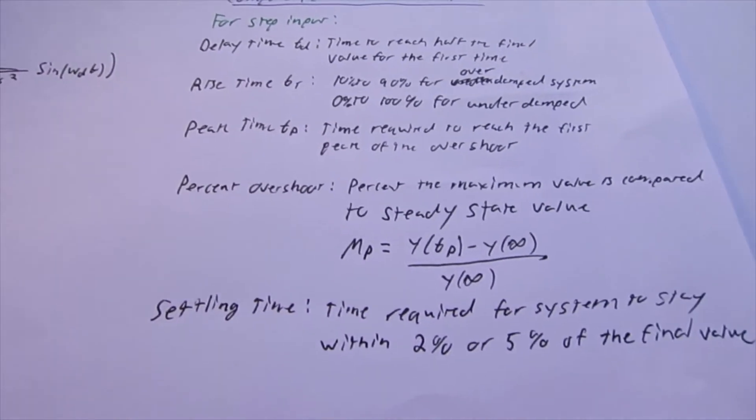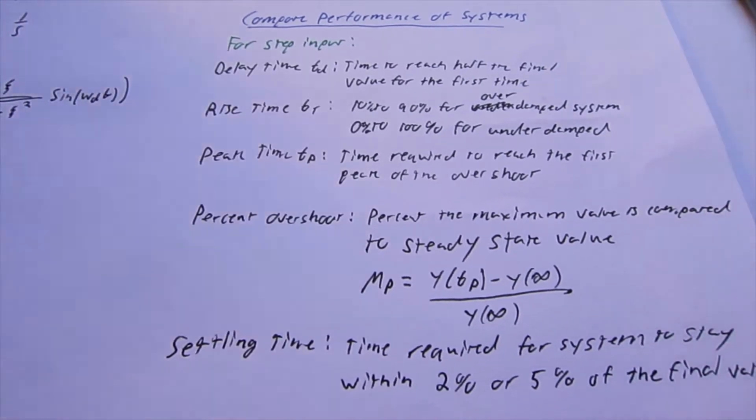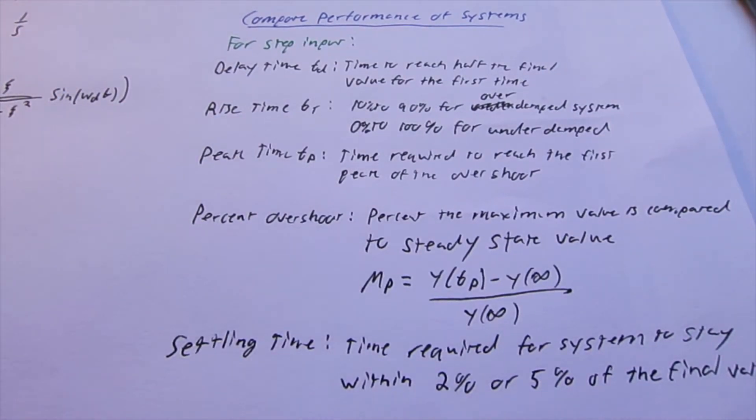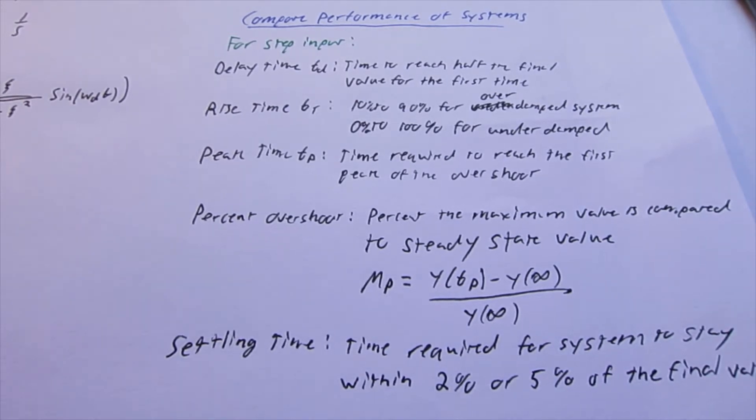And now all these values, the performance of the system can be determined by these values. And for some systems, you might want a very small percent overshoot, or a very short peak time, depending on what you want. Let's say your system is, let's say your air conditioning system in your house can be modeled as a second order system, and it's 50 degrees in your house, but you want it to be 70, so you turn it on.